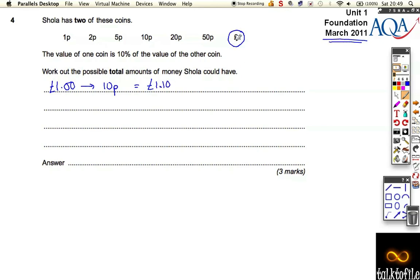But she didn't have to start with the £1. She could start with a 50p. So if she started with a 50p, then the other coin must be 10% of that, so divided by 10 is 5p. That means she could have 55p.